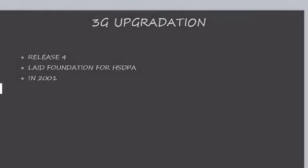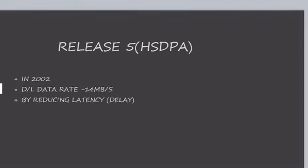3G upgrades: Release 4 laid the foundation for HSDPA and was launched in 2001. Release 5, in the year 2002, is mainly used for downloading, with a download data rate of 14 MB per second, and it also reduces latency.